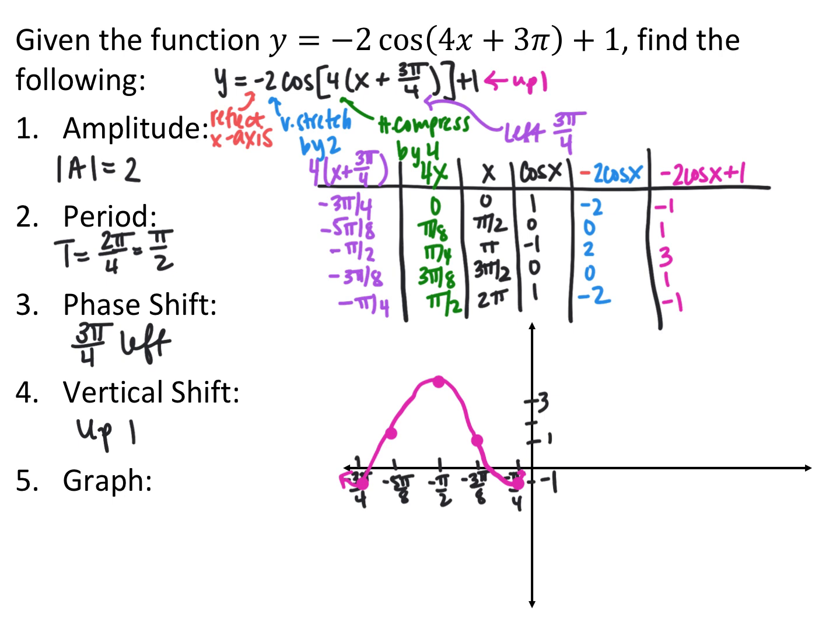Use the table to perform transformations, doing multiplication and division before addition or subtraction. Since cosine is reflected across the x-axis, it starts at its minimum, goes up to equilibrium, then maximum, middle, and back to minimum.